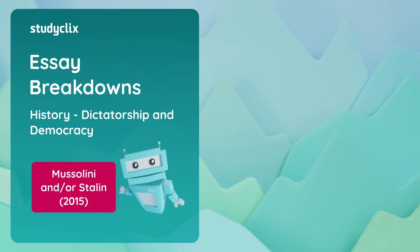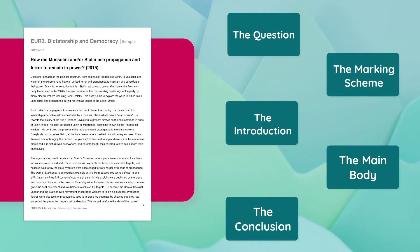Hey guys, Laura here. How are y'all doing? I'm going to go through a Leaving Cert History essay with you today from the 2015 paper. It's from the Dictatorship and Democracy topic, the question about Mussolini and Stalin's use of terror and propaganda. You can see the different sections I'm going to analyse this essay under. I recommend you have a quick read of the entire essay before we start — it would make it clearer as I begin to tear it down.